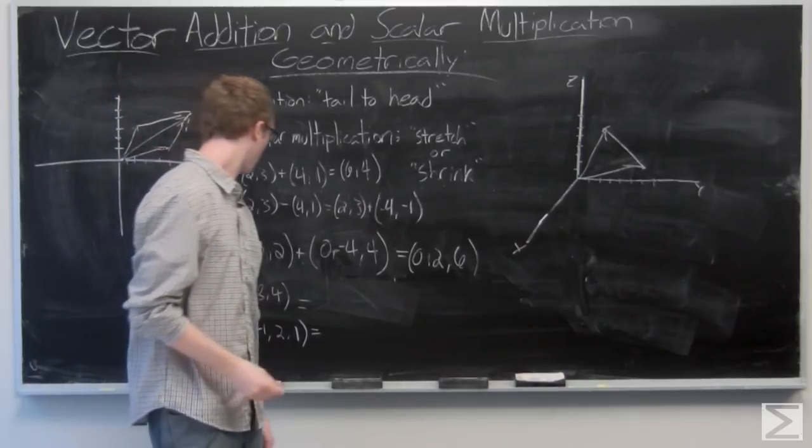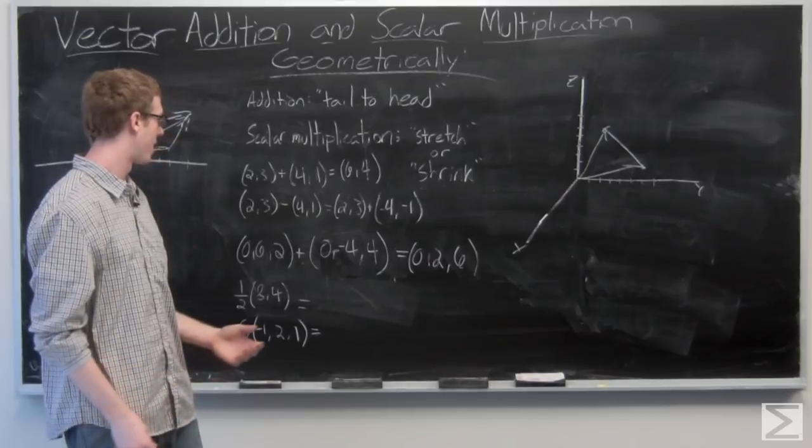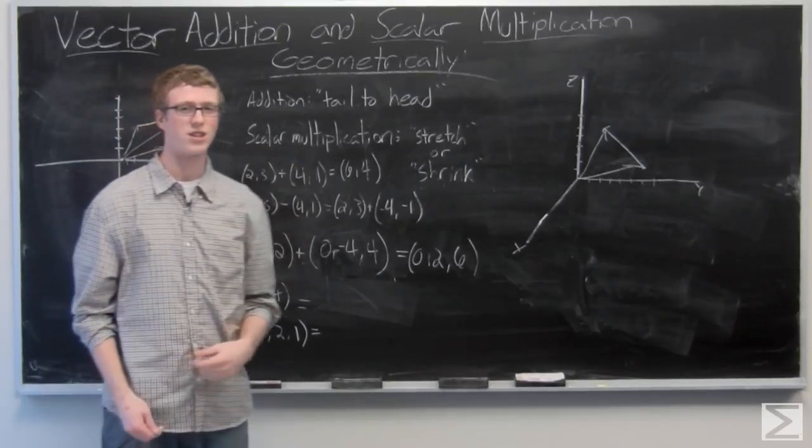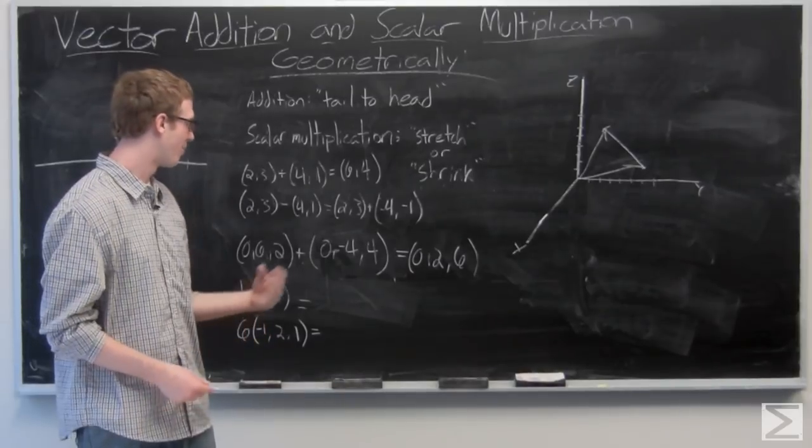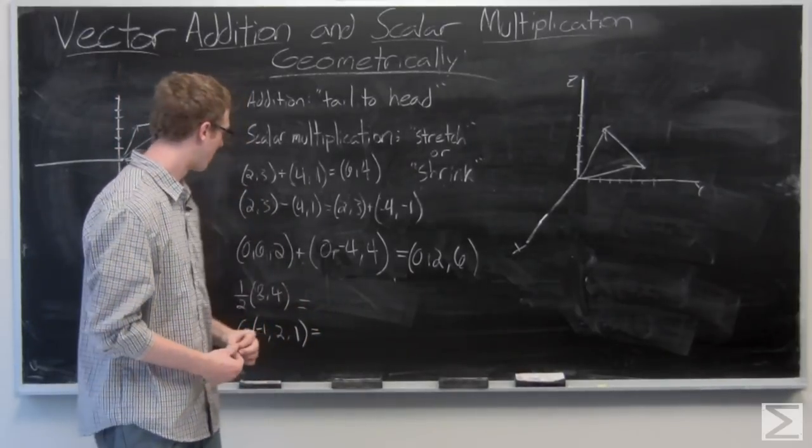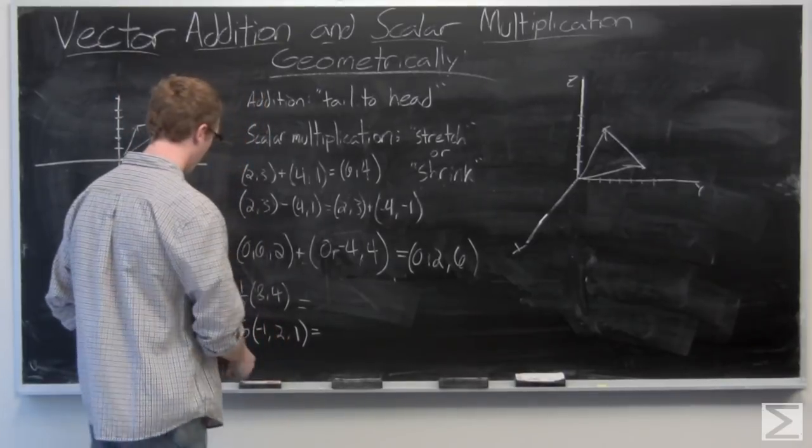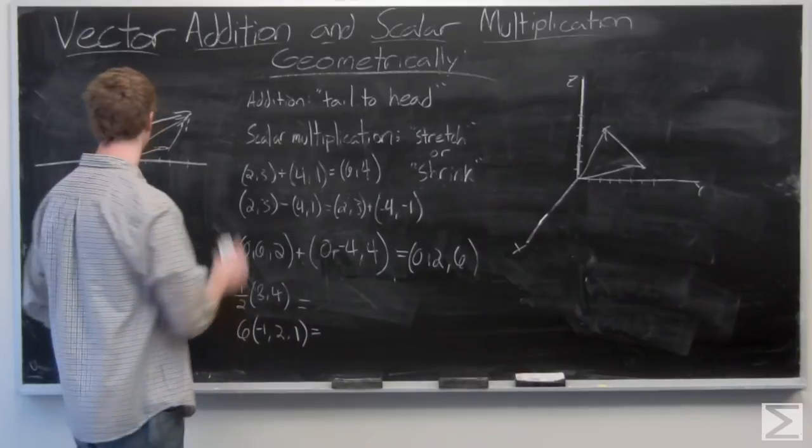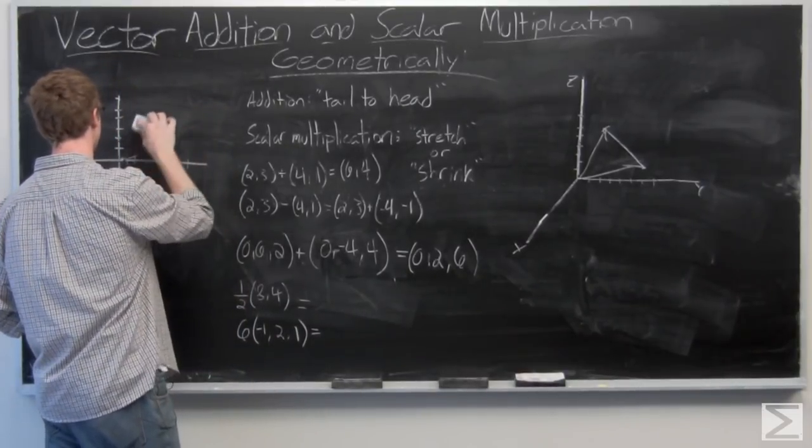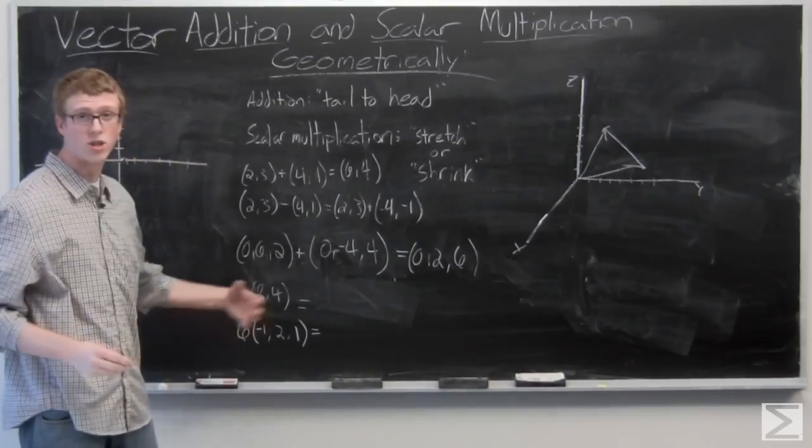Now we can take a look at the geometric interpretation of scalar multiplication. It's going to stretch or shrink your vector depending on if you're multiplying by a fractional scalar or a large scalar. We're taking a look at half of (8, 4) in two space.